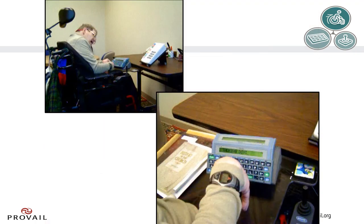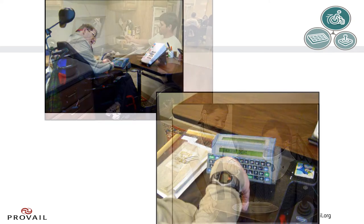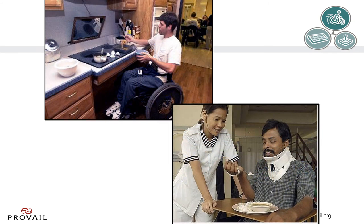Another client is seen here accessing an adapted telephone system with his communication device. Here we see a young man doing some adapted meal preparation. The stove top area has been lowered so that he can reach it. He also has a mirror angled so that he can see down into the pans he is cooking with. In the bottom picture, we can see a man using a universal cuff, allowing him to hold his spoon despite the fact that he does not have a sufficient grasp.